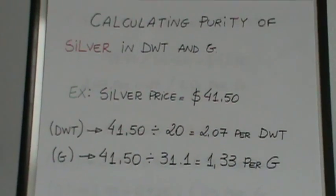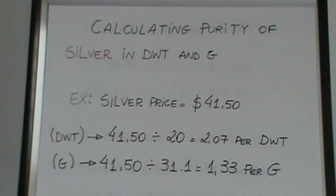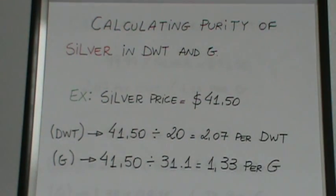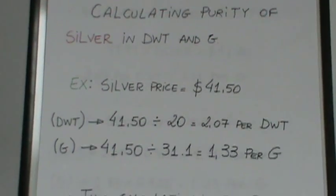Calculating impurity of silver in pennyweights and grams. Let's use the silver price of $41.50. We know there's 20 pennyweights in every troy ounce. So $41.50 divided by 20 is $2.07 per pennyweight. And for grams, we're going to divide by 31.1 grams. And that equals $1.33 per gram. And again, this calculation is for pure silver.